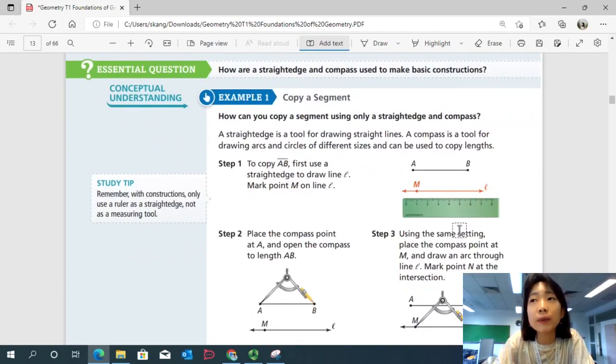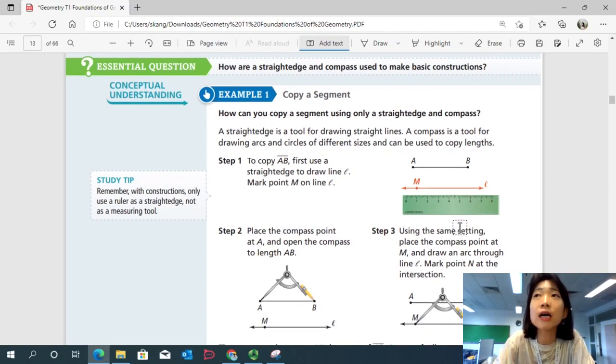Let's look at example one, copy a segment. So let's start with a basic construction, which is a line. How can you copy a segment using only a straightedge and a compass? So how could we copy the exact length of a segment? Remember, by definition, segment has two endpoints. And so it has a certain length. Okay, so if you want to copy a segment on another piece of paper, then you need to know the exact length. So a straightedge is a tool for drawing straight lines. A compass is a tool for drawing arcs and circles of different sizes and can be used to copy lengths.